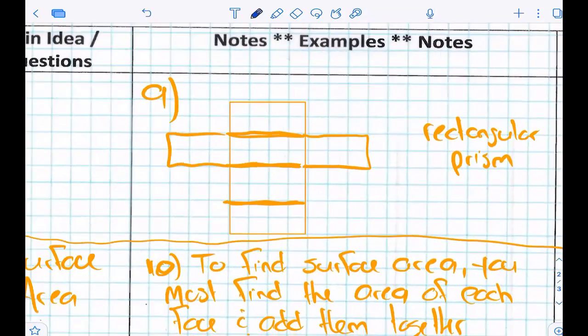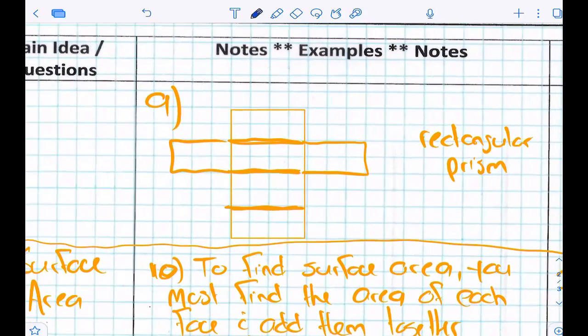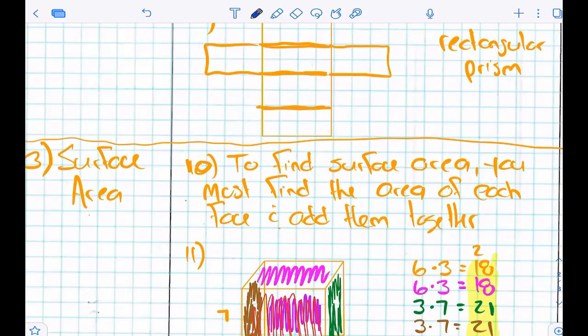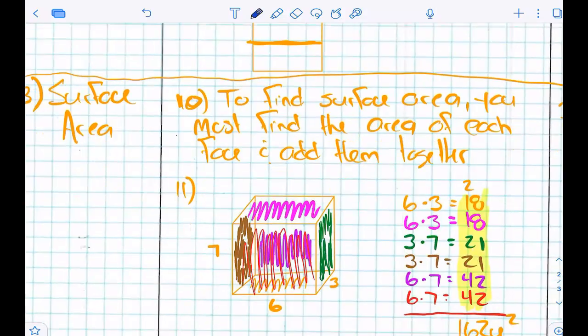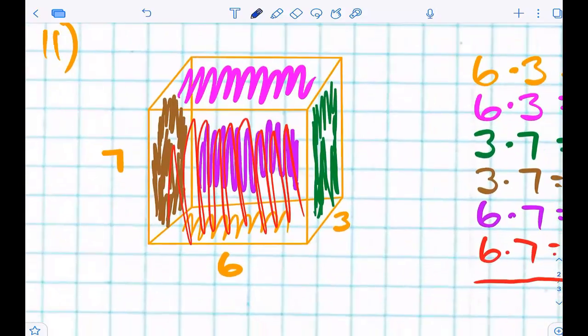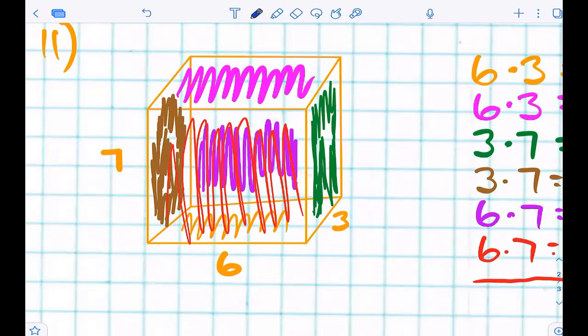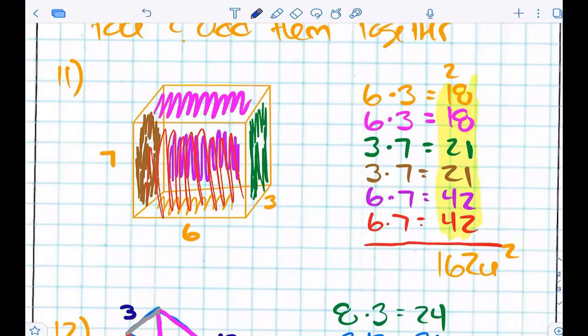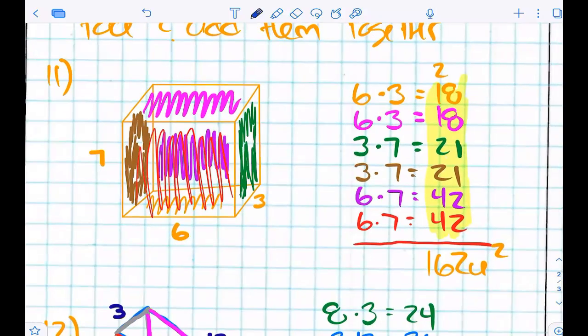If I folded this into a 3D shape, it would make a rectangular prism. You guys okay with all this? Surface area. To find surface area, you'll find the area of all of the sides. This looks like a rectangular prism. How many faces does this have? Six.